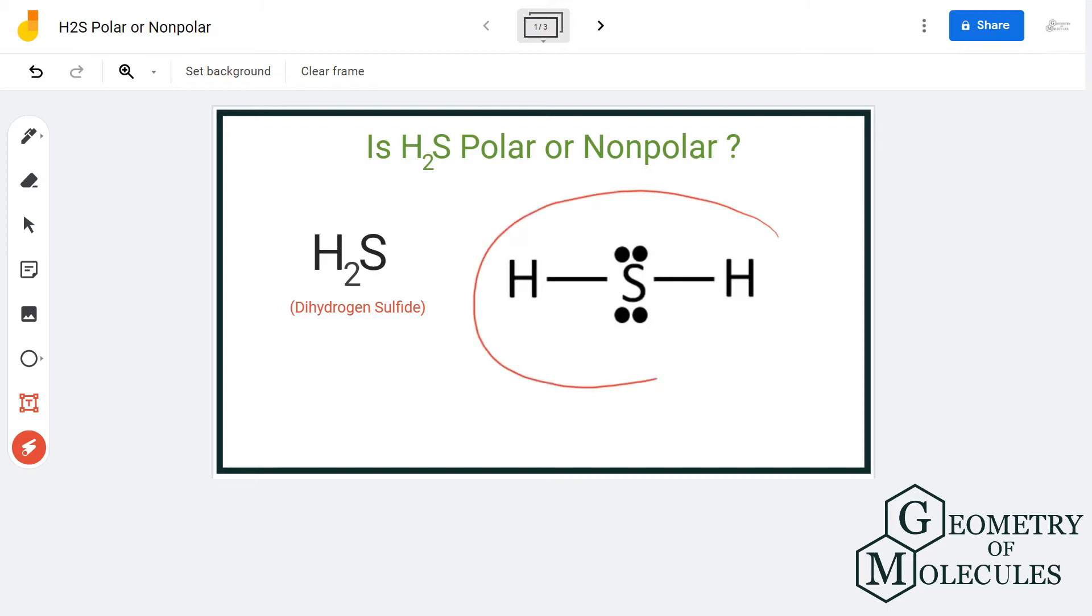Here is the Lewis structure for H2S, in which sulfur is in the center and two hydrogen atoms are on the outside. There is also the presence of two lone pairs of electrons on the sulfur atom, which is the reason we have to look at its molecular geometry.